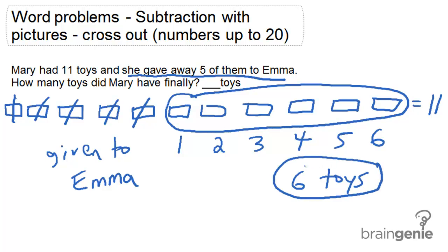And the subtraction sentence was 11 toys to start with minus the 5 that were given to Emma, which equals 6.